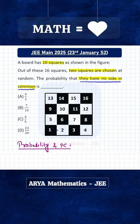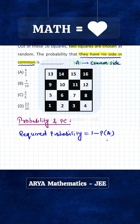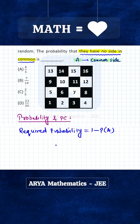Let A be the event that any 2 randomly selected squares have a side in common. The required probability is P(A complement), which equals 1 minus P(A), where event A is that the 2 selected squares have a common side. The total number of ways of selecting any 2 squares from 16 squares is 16C2.